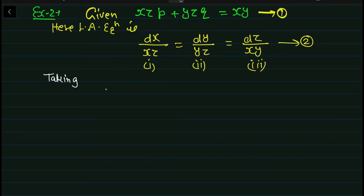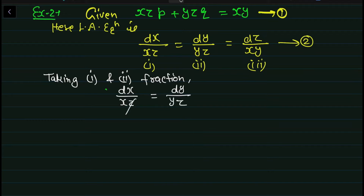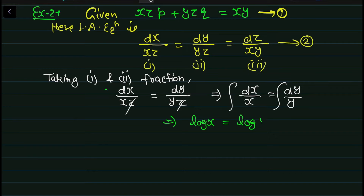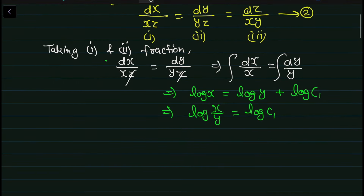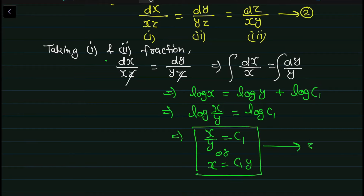पहले दो fraction लेते हैं — taking first and second fraction of equation 2। dx/(xz) = dy/(yz)। z से z cancel होगा: dx/x = dy/y। Integrate करने पर: log x = log y + log C1। Simplify करें: x/y = C1। यह equation 3 — एक solution easily मिल गया।